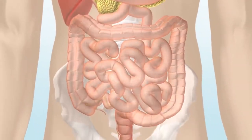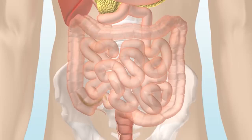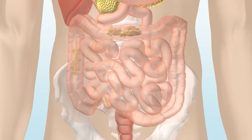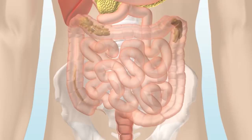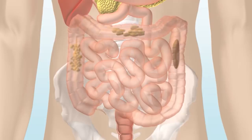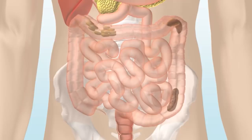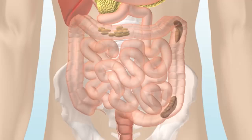In the large intestine, also called the colon, water and salts are absorbed, causing the waste products to become firmer and turn into stool. The stool is then pushed through the intestine towards the rectum by a series of muscle contractions known as peristalsis.